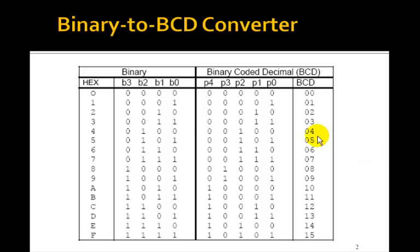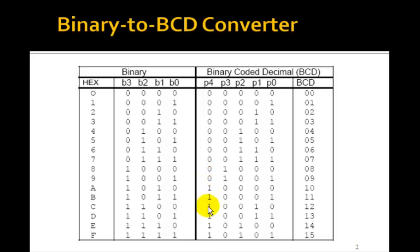Remember in the last lesson we showed that the 4-bit binary number, 0 to F, gets converted to the BCD numbers 0 to 9 and then 10, 11, 12, 13, 14, 15. And these are the 5 bits of the output. P4 is just the 1 here and then the lower 4 digits are the BCD digits 0 through 9.